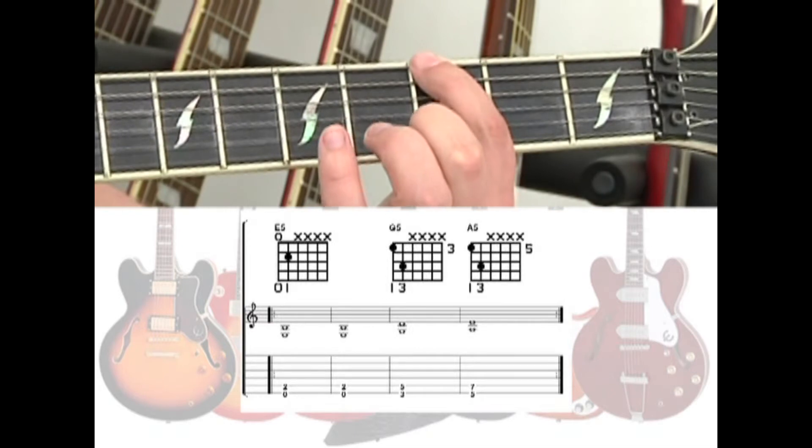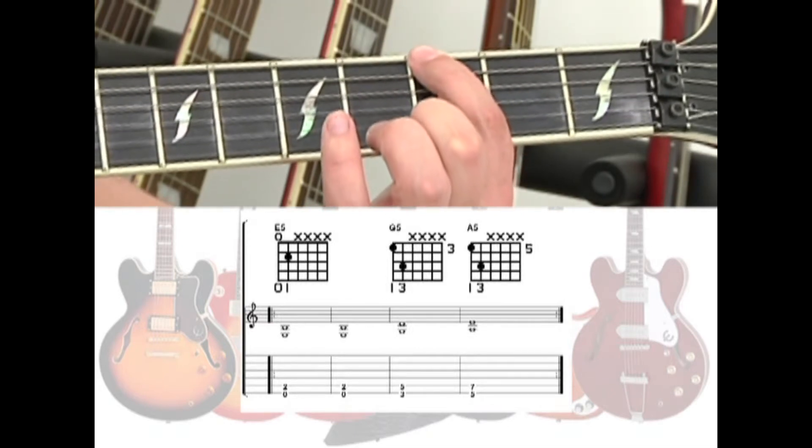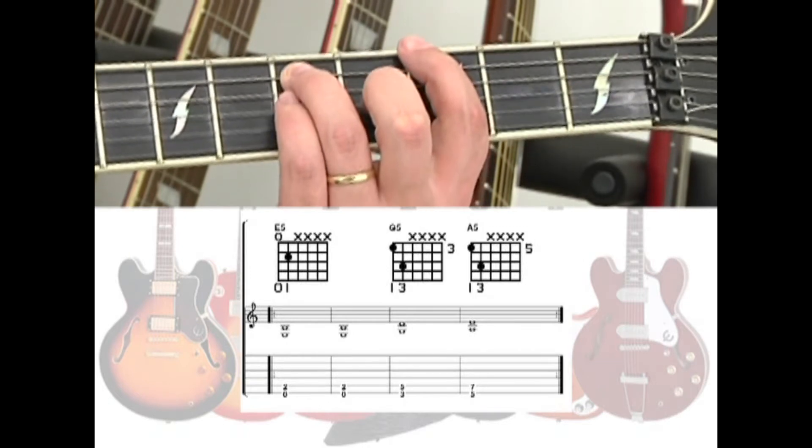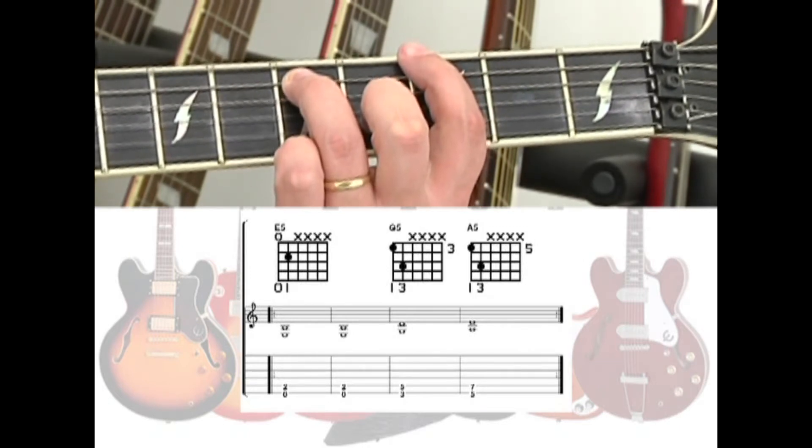Next is G5 with the index finger on the 6th string 3rd fret and ring finger on the 5th string 5th fret for one measure. One, two, three, four.